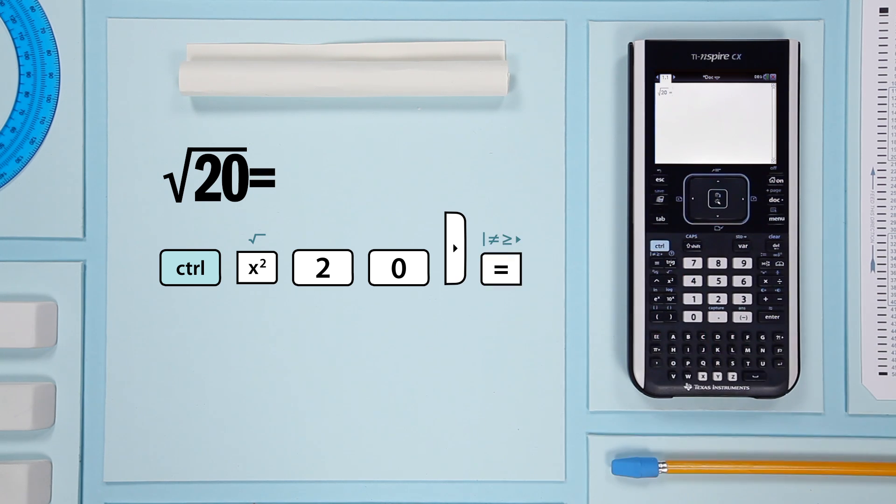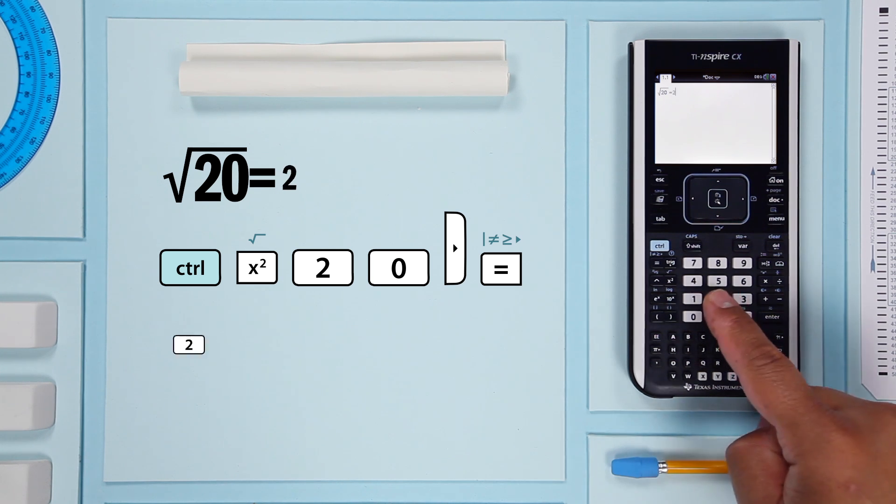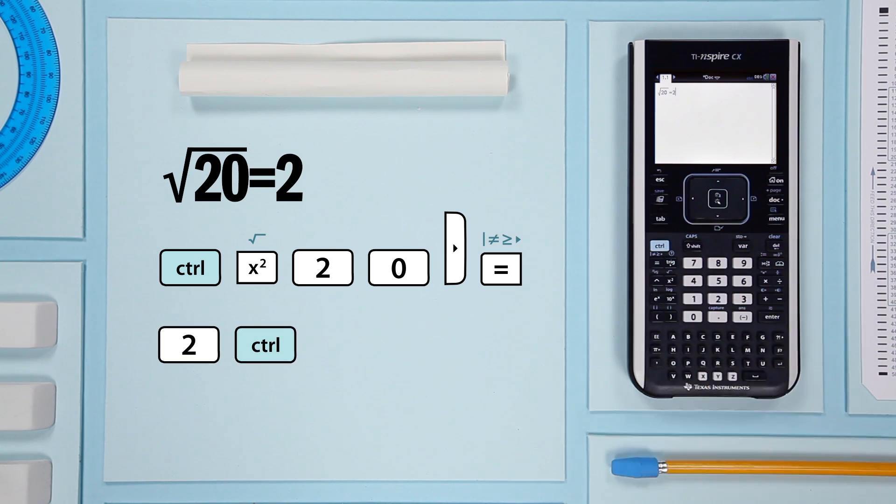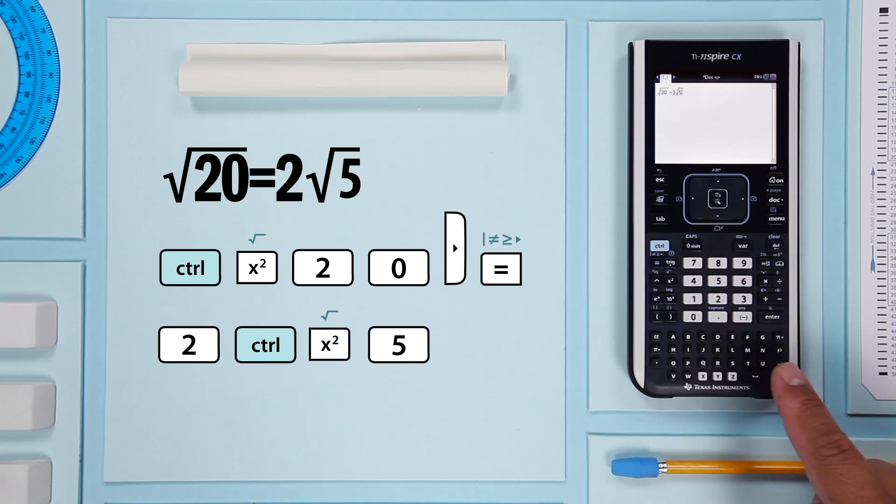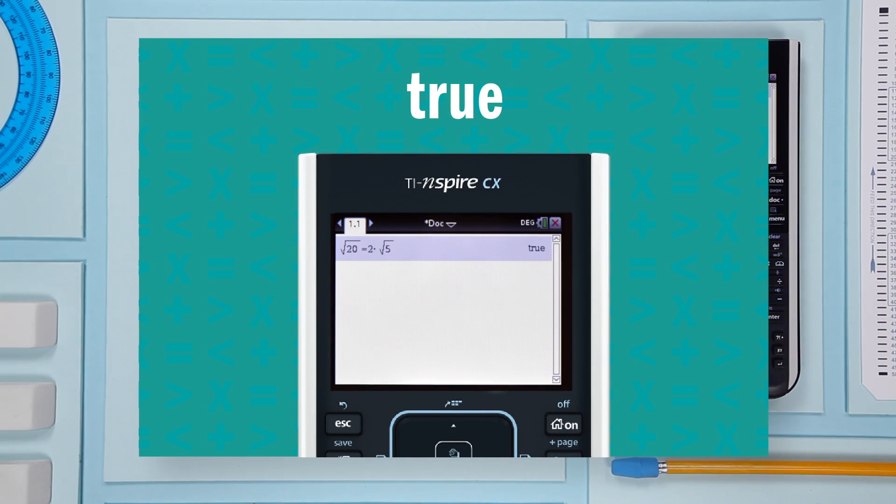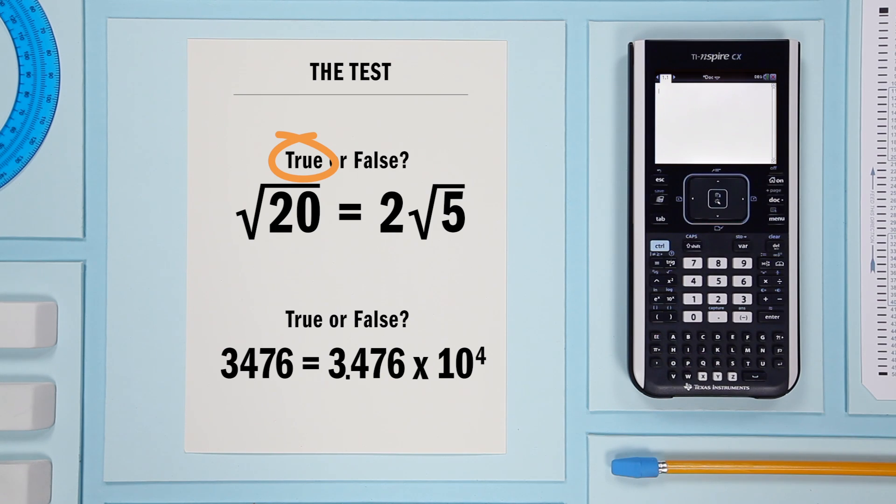press the equal sign. Now plug in the second expression: 2, control, square root, 5, and enter. There you have it—true. The square root of 20 is equivalent to 2 times the square root of 5.